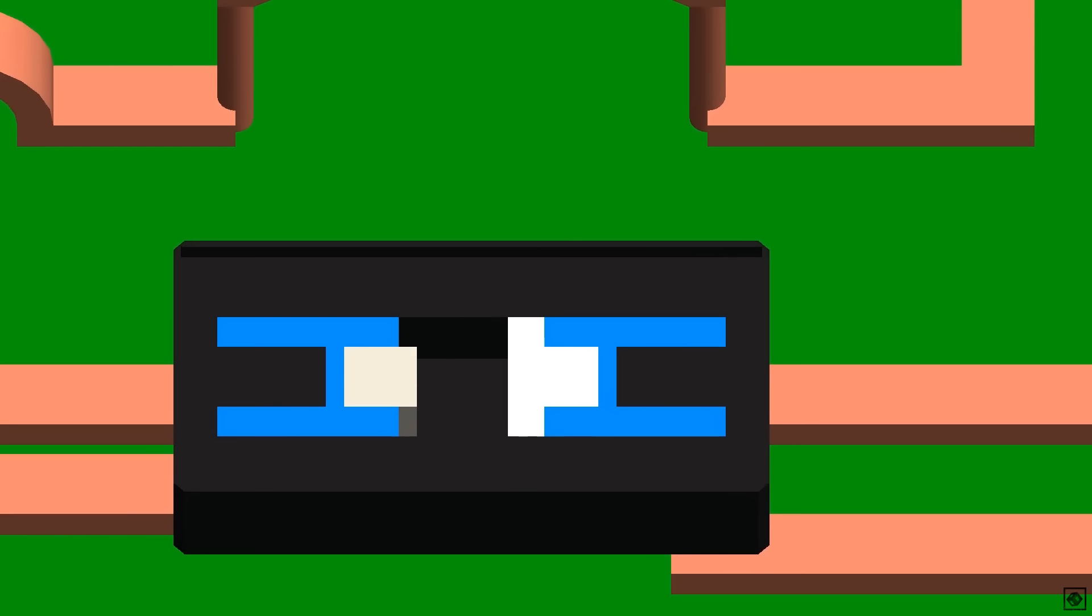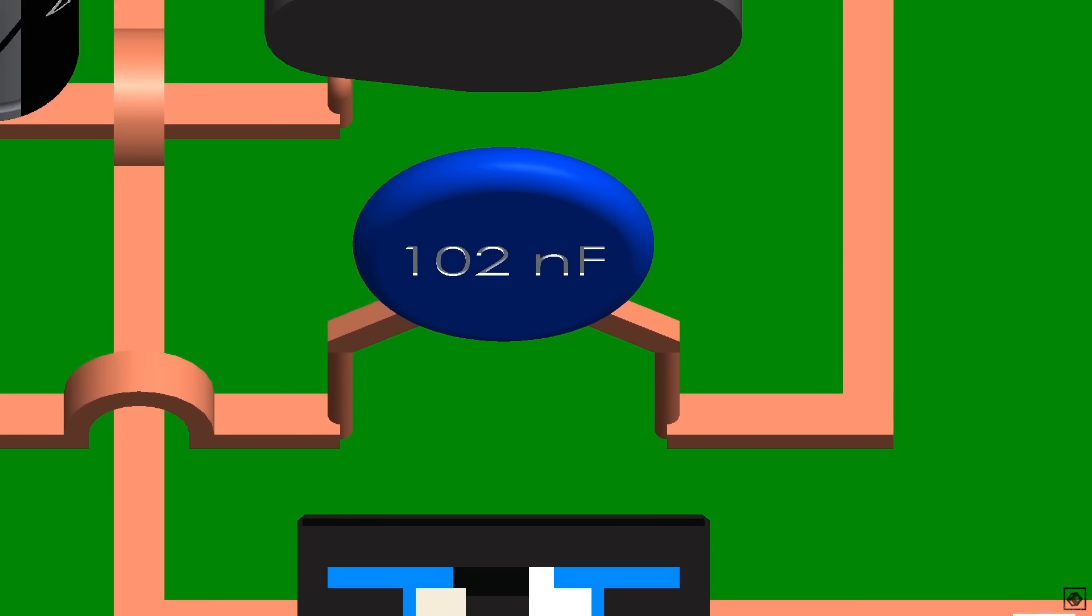This is an optocoupler. It is used for transmission of signal without contact. On the right side we have an infrared LED and on the left is a phototransistor. When the LED turns on, its light turns on the base of the phototransistor turning it on. This capacitor is 102 nanofarad used for safety purposes. It is connected between primary and secondary grounds to stop electromagnetic interference.